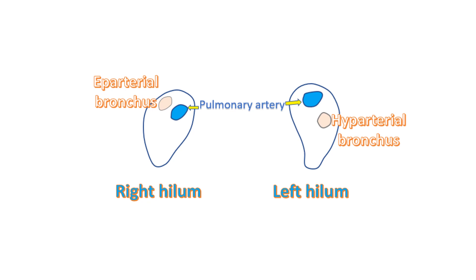The left lung has two lobes and a relatively longer bronchus which is below the left pulmonary artery — this is known as the hyparterial bronchus. The right lung has three lobes and a wider, shorter bronchus which is above the right pulmonary artery. The right bronchus is eparterial.